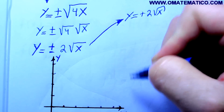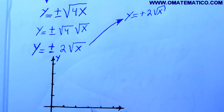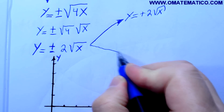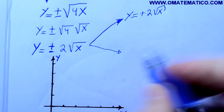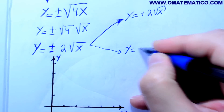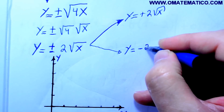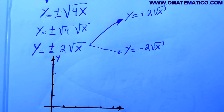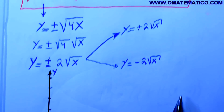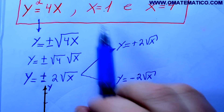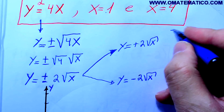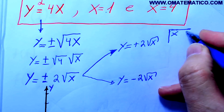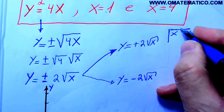E a outra com o menos, então y igual a menos 2 raiz de x.